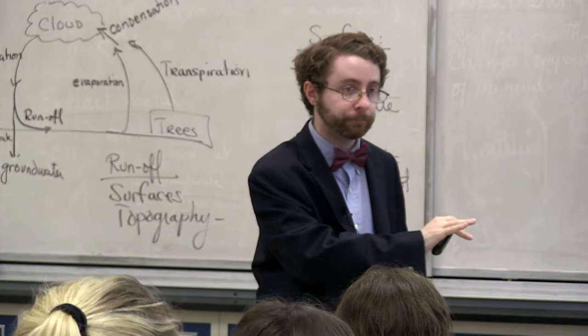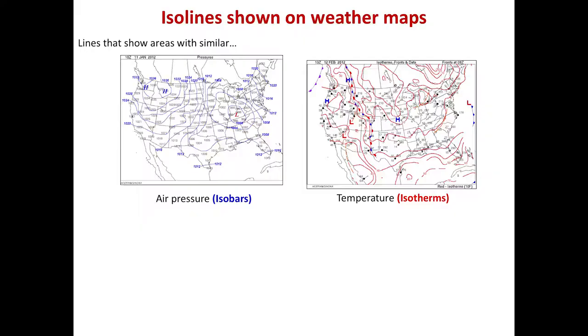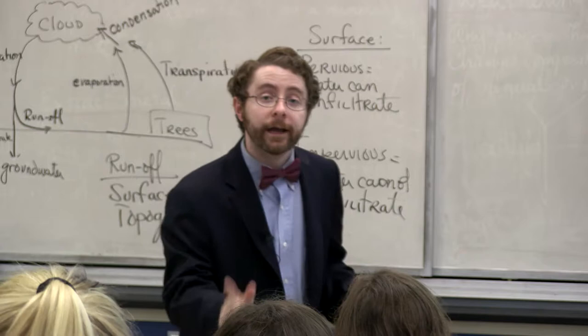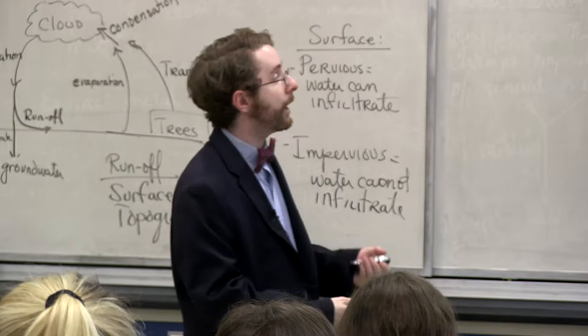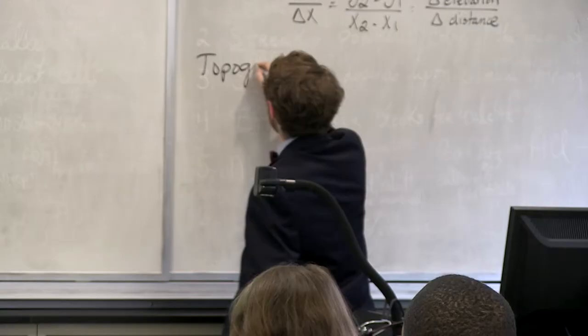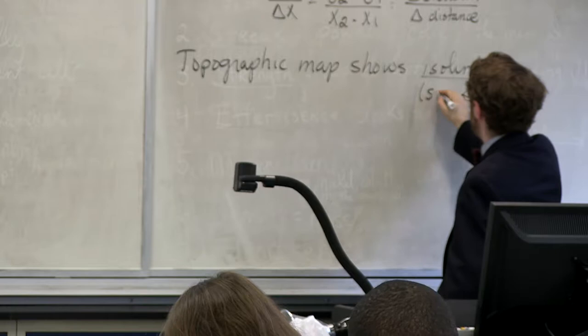You can have maps with iso lines that show air pressure or temperature — you might see weather maps on TV shown this way. In the case of topography, what we're interested in today, topography shows iso lines of elevation. Your topographic map shows iso lines — iso means the same value of elevation.